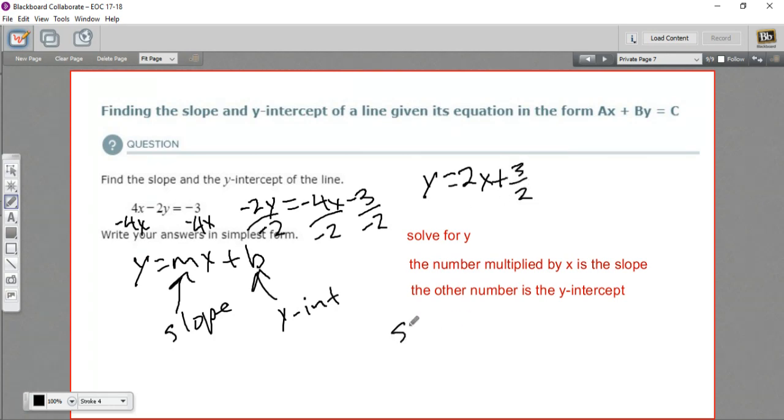So our slope is the number that's multiplied by x. That is 2. And our y-intercept is the other number, and that's 3 halves.